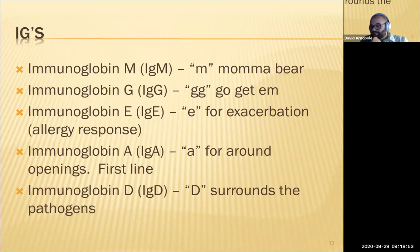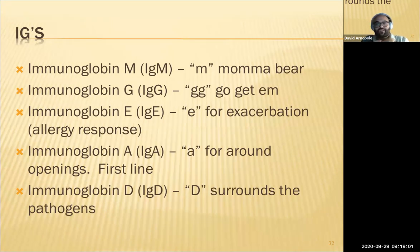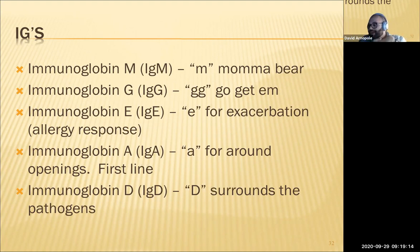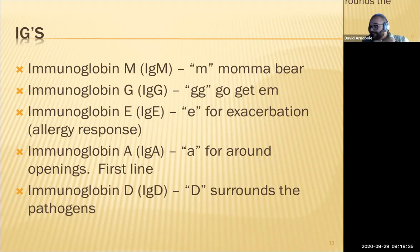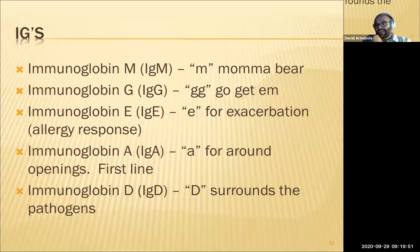Immunoglobulins are the antibodies — IgM, IgE, IgG, IgA, and IgD. IgM is the first to appear when a pathogen is present — it's happening right now. IgG means long-term immunity — they remember what was there and fight it off later. IgE is for exacerbation or allergy responses like anaphylaxis. IgA is always found around openings. IgD surrounds the pathogen itself — we think it helps surround and stop it from moving, though we still don't fully understand IgD.